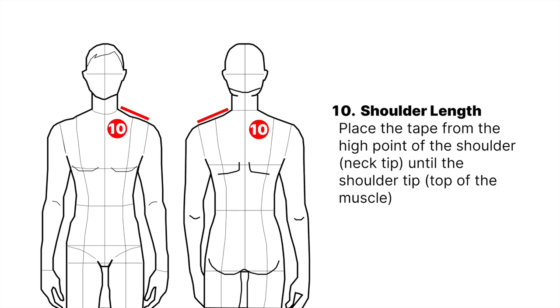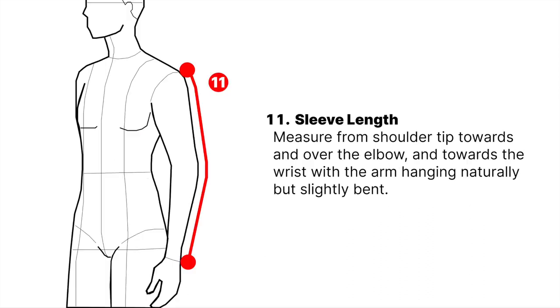Shoulder length: place the tape from the high point of the shoulder until the shoulder tip. Sleeve length: measure from the shoulder tip towards and over the elbow and towards the wrist, with the arm hanging naturally but slightly bent.